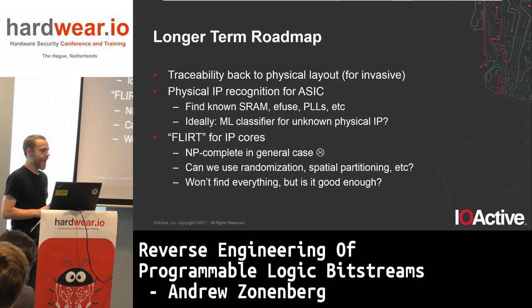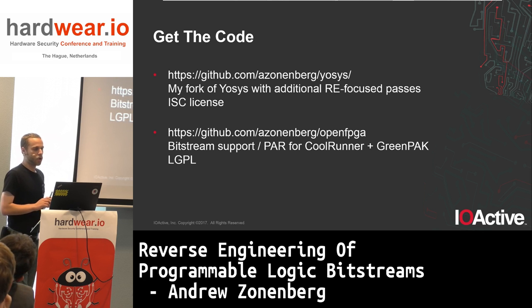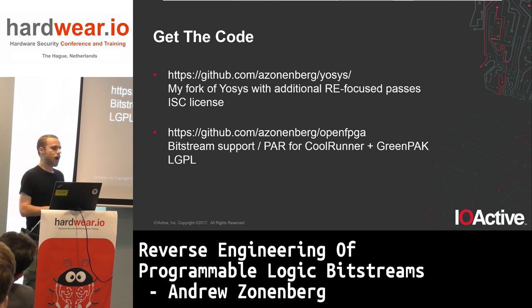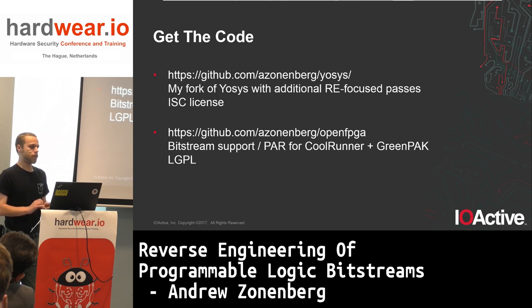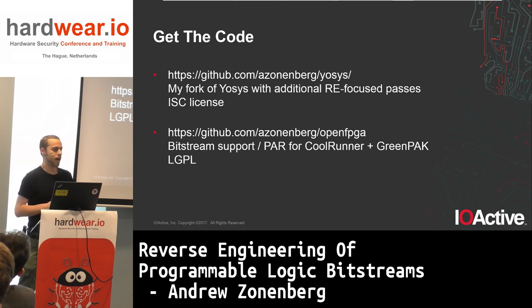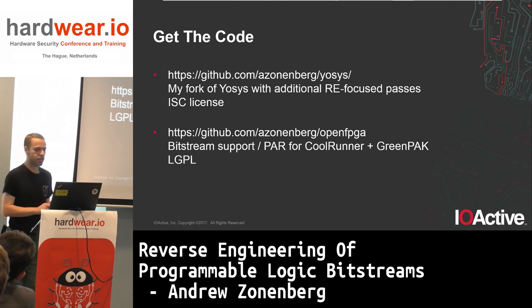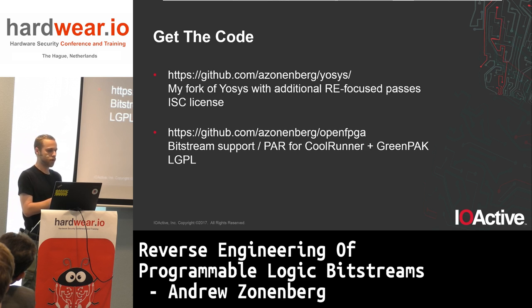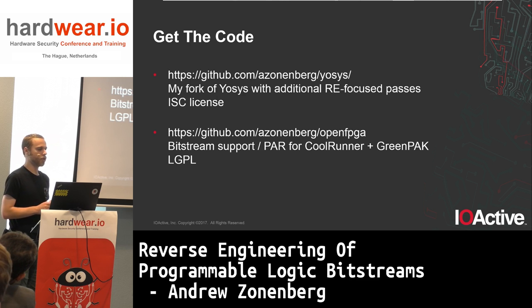The code is all available online. Most of the higher-level analytics are in my fork of Yosys; I'm in the process of merging back to mainline — about half to two-thirds of what I talked about is already in mainline Yosys. The toggle flip-flops, toggle flip-flop counters, and adders need a little more refactoring to meet Clifford's standards, but everything is in my fork under a permissive ISC license. The front ends for CoolRunner and GreenPak are in a separate repo, including full place-and-route for GreenPak and partial support for CoolRunner, under LGPL. The IceStorm tools are available separately for the iCE40 front end.